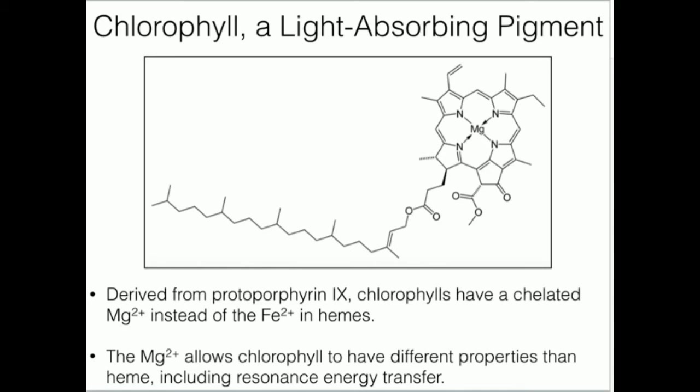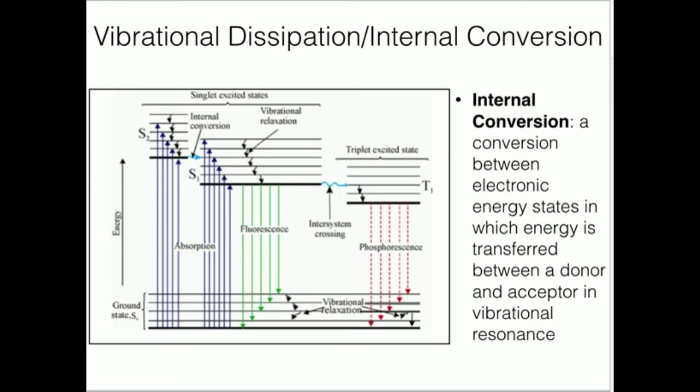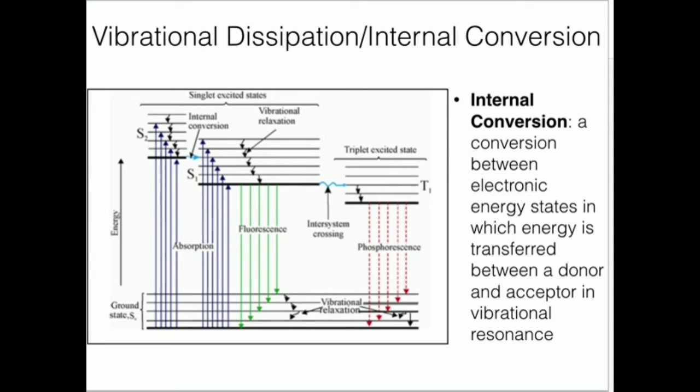One of those properties specifically is what we're going to be referring to as resonance energy transfer. To understand this, we need to look at this diagram here, which if you've taken any kind of analytical chemistry, this is called a Jablonski diagram. It shows various electronic states from low energy at the bottom to high energy at the top and any kind of electronic energy dissipation. You see on the far right, we have phosphorescence, then fluorescence, and absorption. You may have seen some of these quantum mechanical phenomenons before, but not maybe in the context of biology or biochemistry.